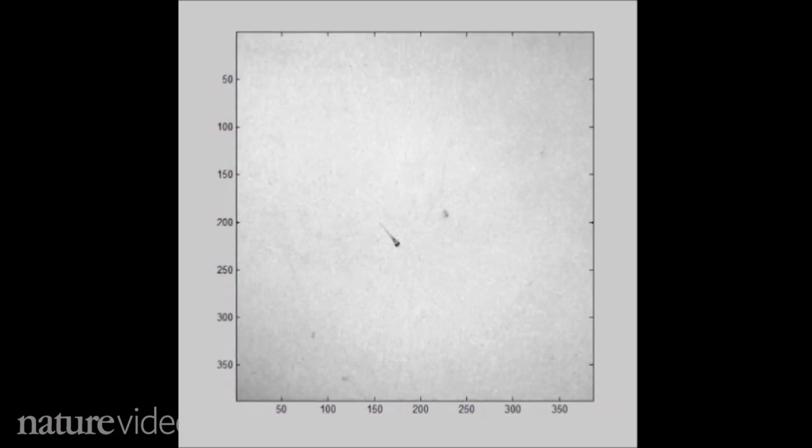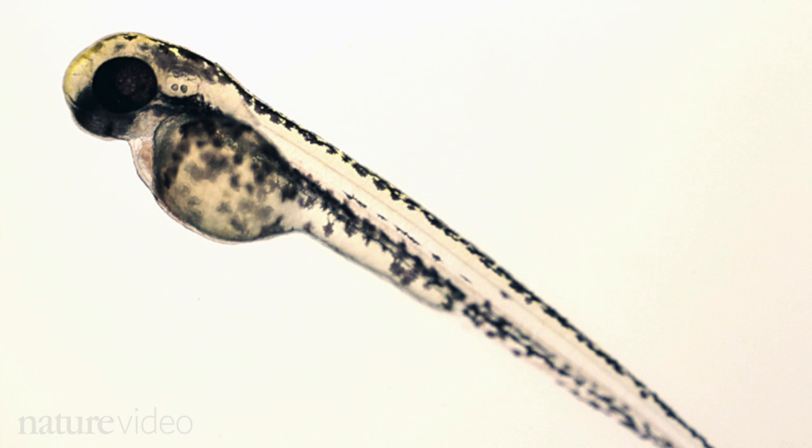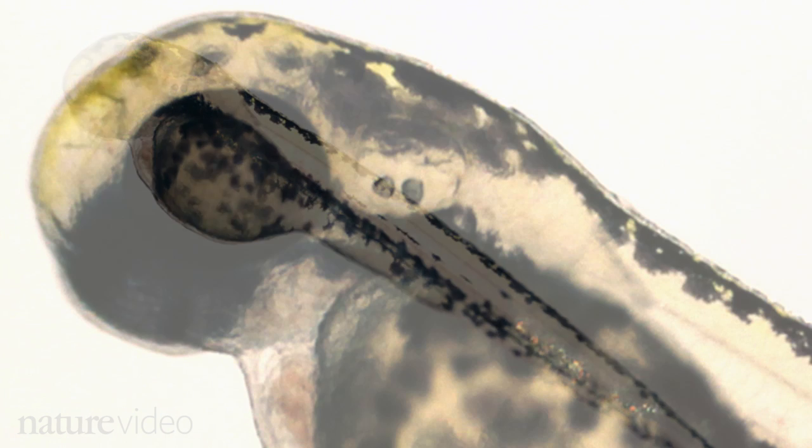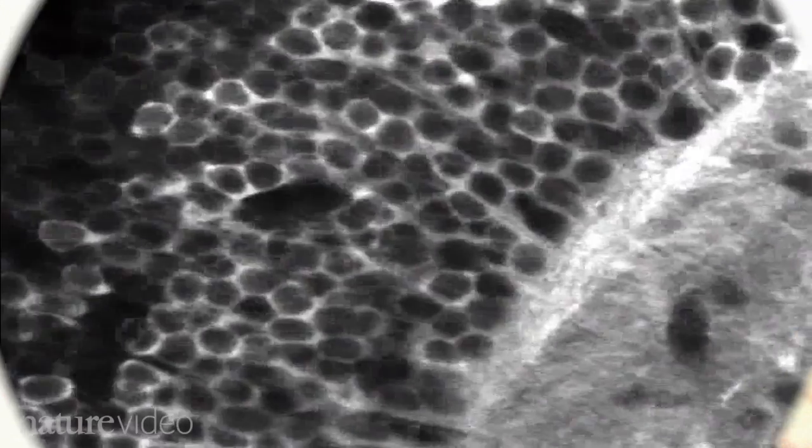Baby zebrafish are tiny and transparent, which makes them ideal animal models. At five days old, the baby fish is four millimeters long. Its brain holds just a few hundred thousand neurons. That's big enough for complex behaviors, but small enough that you can see all of the individual cells under a microscope.